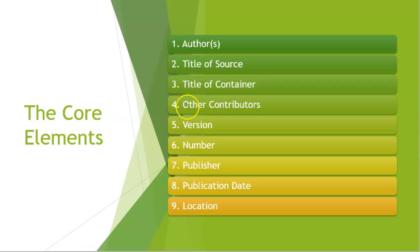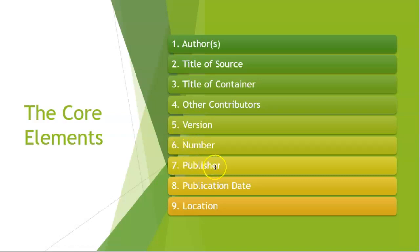Fourth is other contributors. If there are others who contributed to the project, you'd include them there. Fifth is the version — maybe you're using the third edition of a textbook, for example. Sixth is the number, like if it's part of a series. Seventh is the publisher, whoever created the actual publication, like a record company for the album.